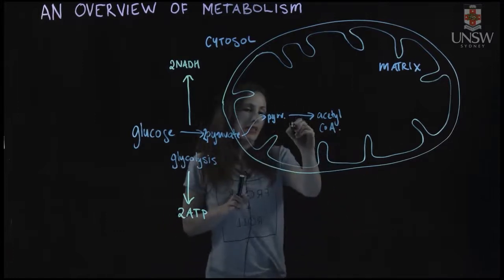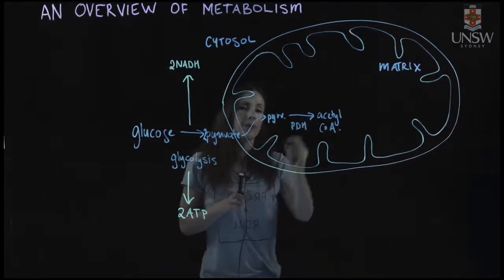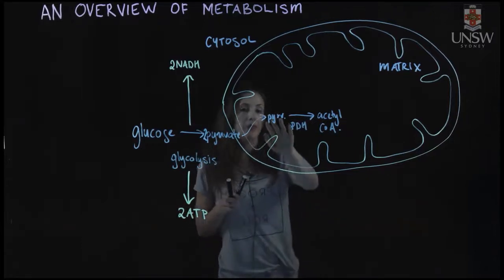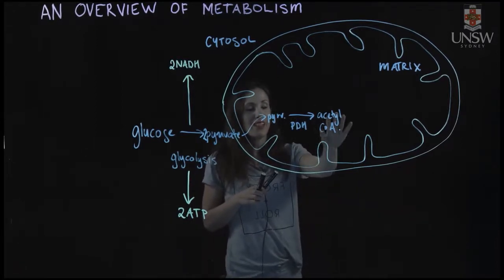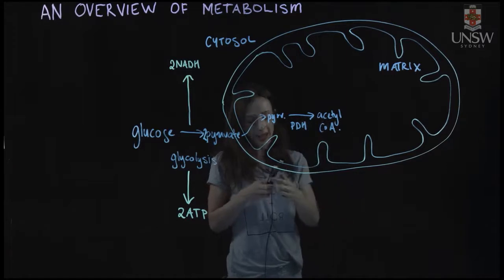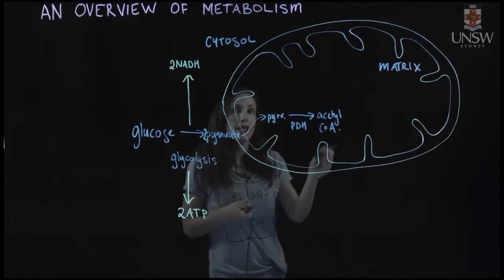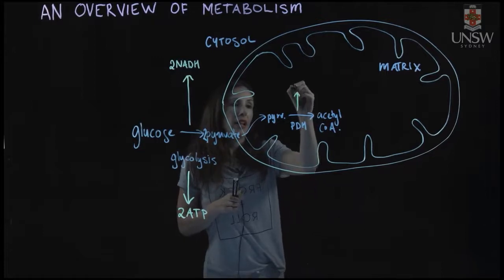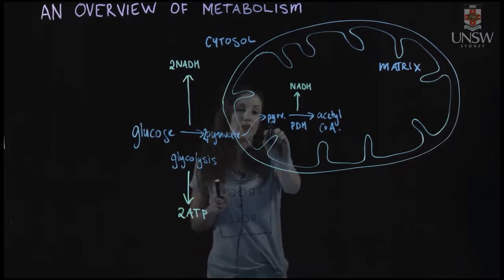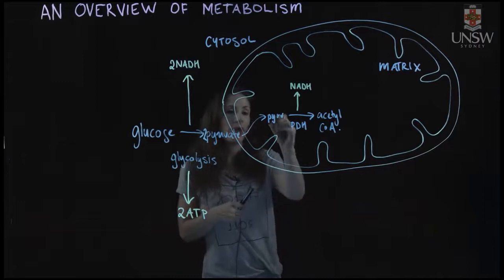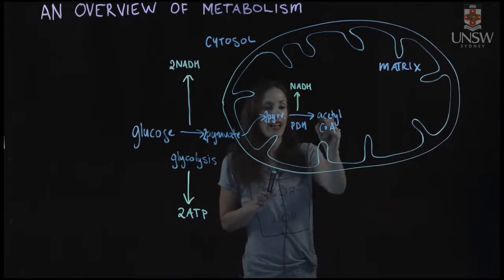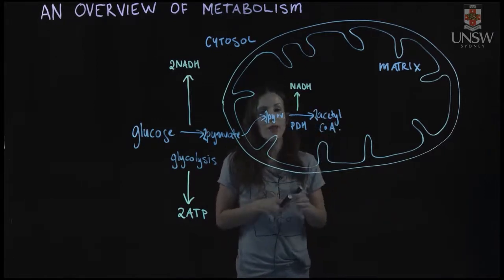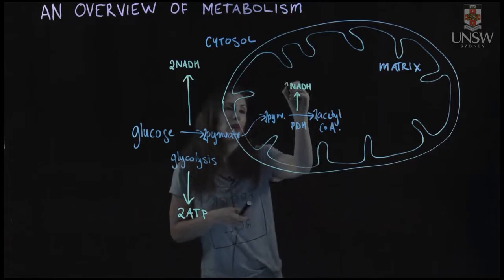The enzyme that does this is called pyruvate dehydrogenase. In the process where pyruvate becomes Acetyl-CoA, we go from a three-carbon molecule to a two-carbon molecule, and carbon dioxide is also produced along with NADH. Because we have two pyruvates coming in from glucose, pyruvate dehydrogenase produces two Acetyl-CoA and two NADH.